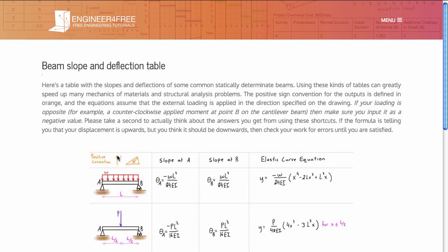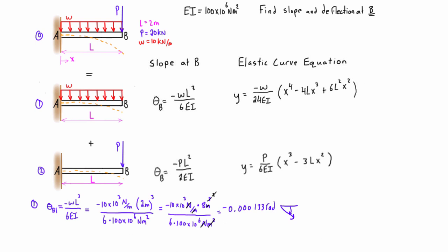We can confirm the sign convention from the table: a positive theta value would be counterclockwise off the axis, so a negative value means the angle is going downward — which makes sense because the distributed load is pushing the beam down.